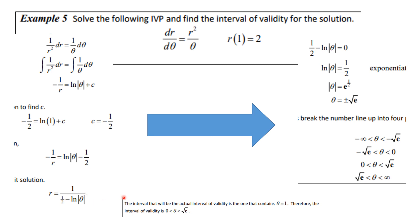We still need the interval of validity. We must avoid the denominator being zero, so 1/2 − ln|θ| = 0 when ln|θ| = 1/2, meaning |θ| = √e, so θ = ±√e. That breaks the real number line into four pieces. Since our initial condition is at θ = 1, we take the interval that contains θ = 1, which is the interval of validity.